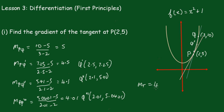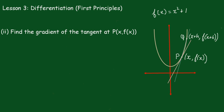Now we'll do a more formal treatment. Find the gradient of the tangent at not a specific point but the general point x, where f(x) = x² + 1.